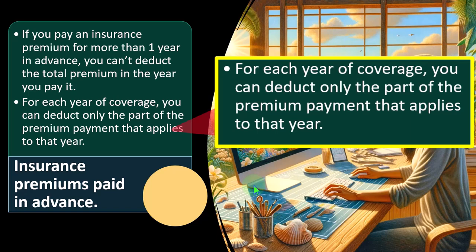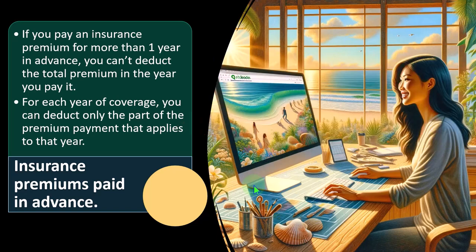This adds complication to the bookkeeping process. The easiest thing might be to pay the premium and record it as insurance expense, but because the IRS forces an accrual treatment, you'd record it as an asset — prepaid insurance — and then calculate how much insurance expense was consumed via an adjusting entry at year-end, to be in compliance with the tax code.